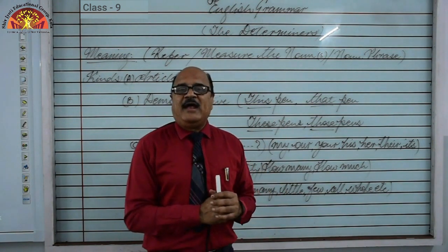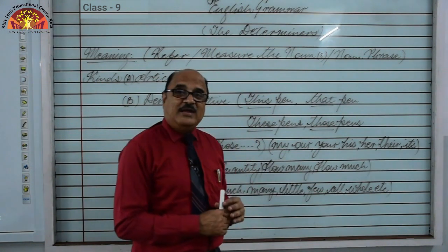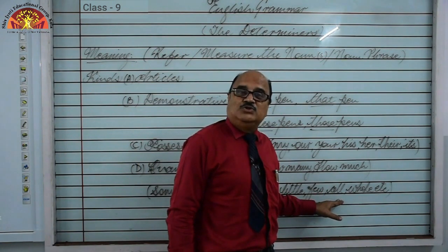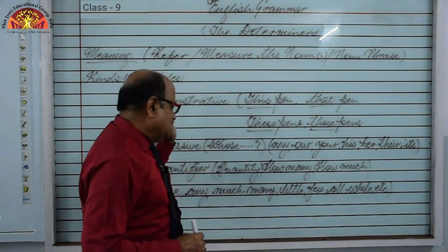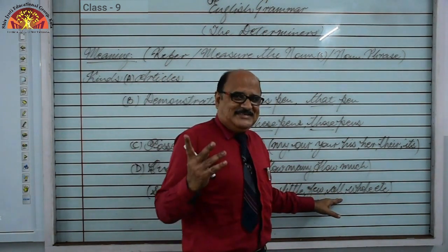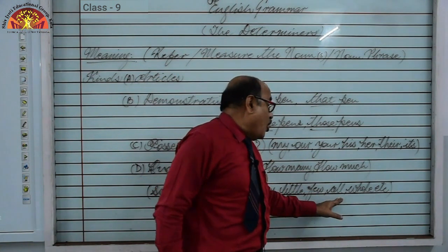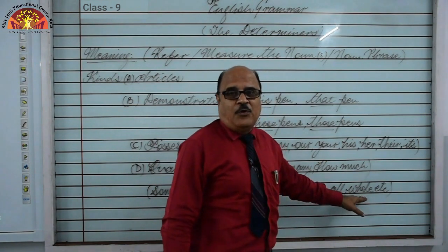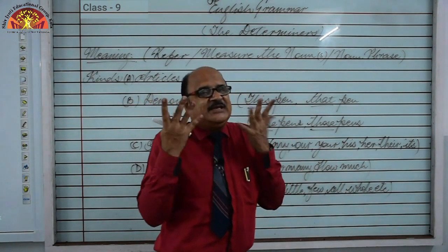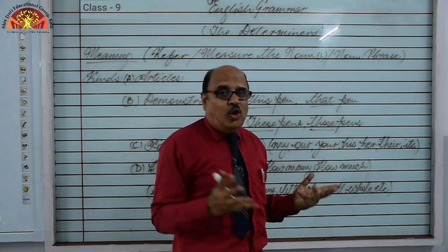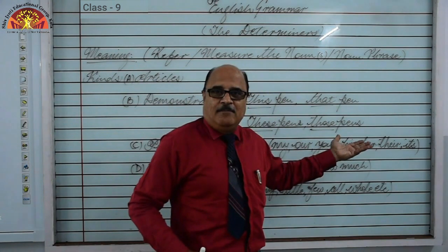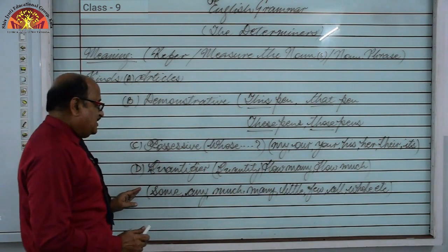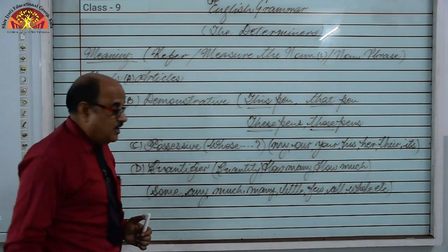'A few friends' means not many but some. 'The few friends he had ditched him in the end.' So we can use 'the few' as well. 'All' is used for countables and 'whole' is used for uncountables. 'All boys' — boys are countable, so 'all boys' is correct. 'Whole world' — we can never say 'all world.' 'Whole class' but 'all boys.' That is how the quantifier determiner works.